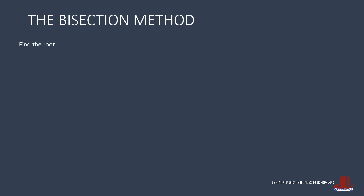The problem is to find the root nearest the origin for the function f(x) = 3e^(2x) minus 2 cosine of 0.78. The iteration should be accurate to three decimal places, where cosine of 0.78 is taken in radians.